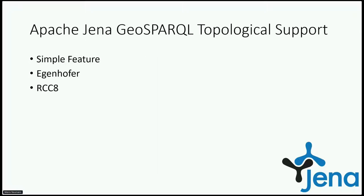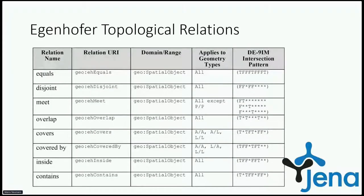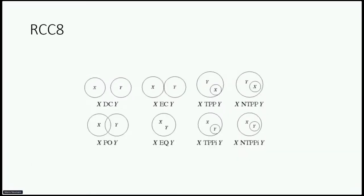A dimensionally extended 9-intersection model (DE-9IM) matrix pattern should be available to specify an intersection pattern to represent a particular relationship. The different families of topological relationships that should be available are defined in the standard as simple features, Egenhofer, and the region connection calculus — RCC8. The simple features family defines: equals, disjoint, intersect, touches, within, contains, overlaps, and crosses. Furthermore, the representation of each topological relationship has to be definable in the form of an intersection matrix. The Egenhofer family defines quite similar relations: equals, disjoint, meet, overlap, covers, covered by, inside, and contains.